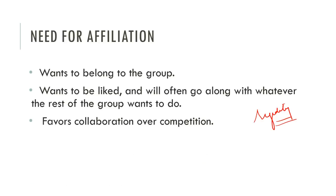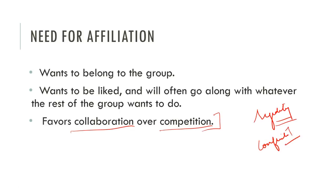Affiliation-need people like collaboration over competition. Need-for-achievement people like to compete and stay on top, whereas need-for-affiliation people like to collaborate — they even compromise their winning positions so that they don't get into conflicts. They avoid conflicts by choosing collaboration.